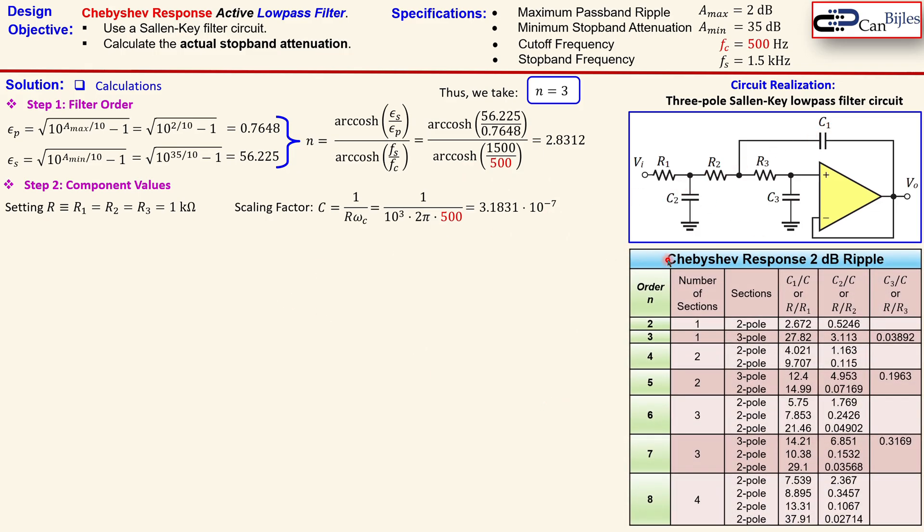Now here is the table for Chebyshev response, 2 dB ripple. You see here the order in the left column and the number of sections you need for each order and also what kind of a section you need.